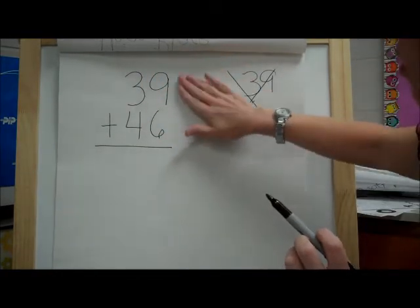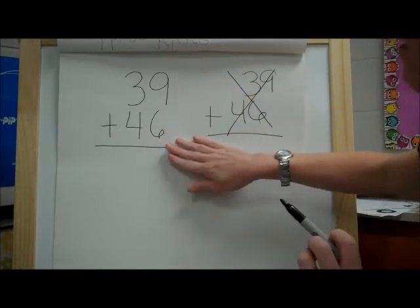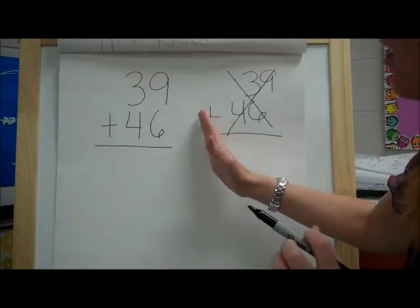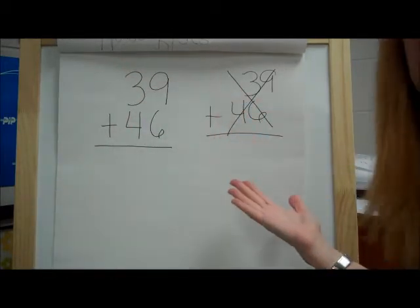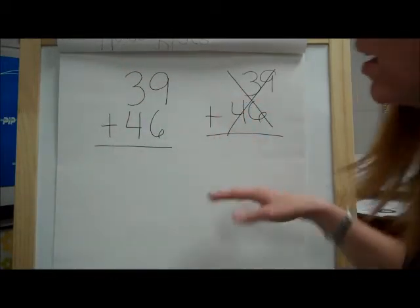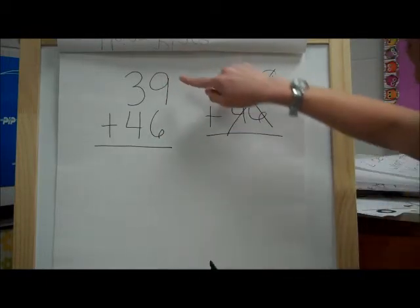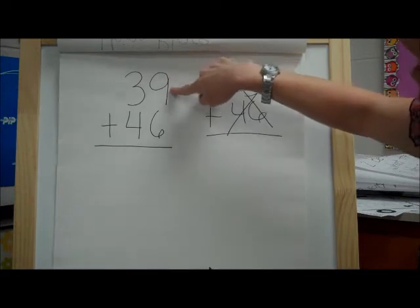All right, so we're going to start with the ones place. We always start with the ones place when we use place value to add, because we might have to regroup, and you don't want to start over here and work your way this way and then have all these extra digits that are in the wrong place. So we always start from the right. We always start in the ones place. All right, so we're going to start with nine plus six.